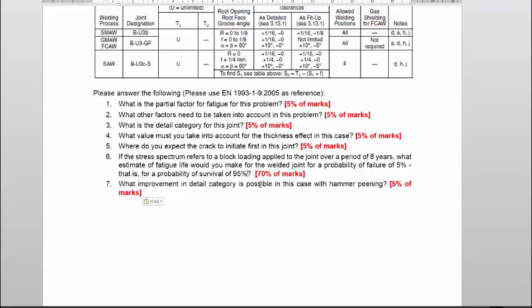As we know, these SM curves are for confidence levels in the area of 70 to 75 percent. What improvement in detail category is possible in this case with hammer pinning if we apply that after the smoothing?